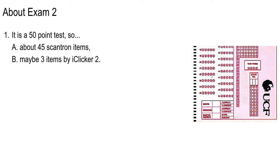There might be a multiple choice iClicker question to start it, and then after that it will be some larger answers — either a short answer where you're typing in numbers and letters, or a calculation where you're typing in a number like 5.3 or something like that. We're going to do an iClicker calculation today, and you're going to have to use the decimal point on the iClicker. We're going to have the lights all the way up so it'll be easier for you to see. On Thursday when you're taking the exam, you'll also have the lights on all the way.